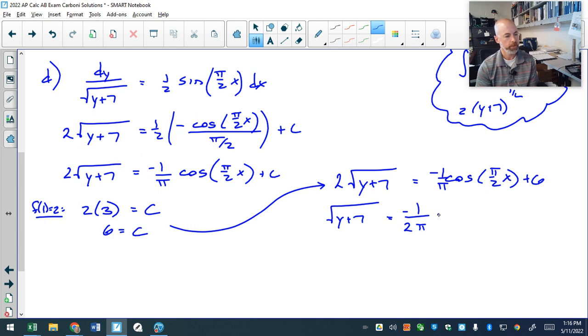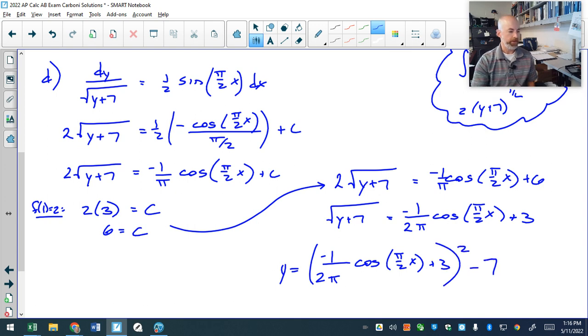We will square that whole thing and subtract 7 to have my final solution of negative 1 over 2 pi, cosine of pi over 2x plus 3 all squared minus 7, and there's my solution. Hopefully I didn't make any careless mistakes, so there is number 5 and we have one more to go.